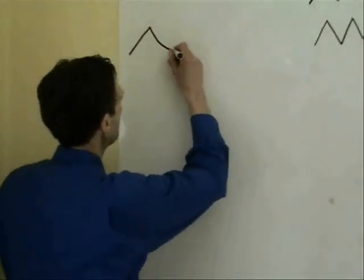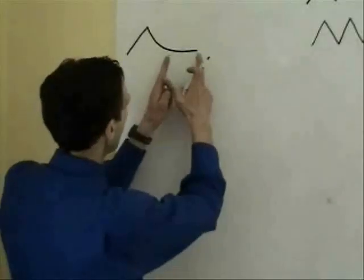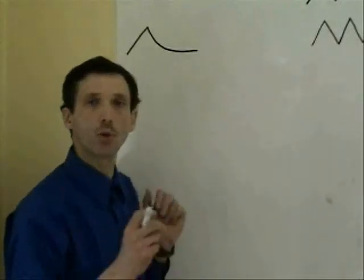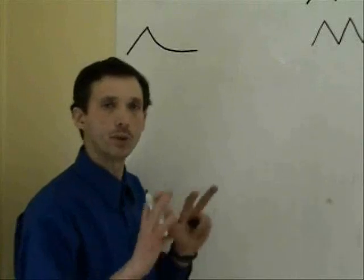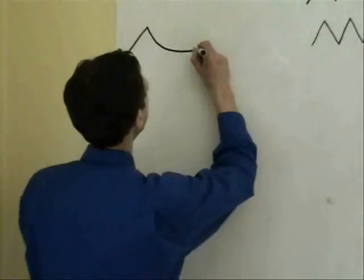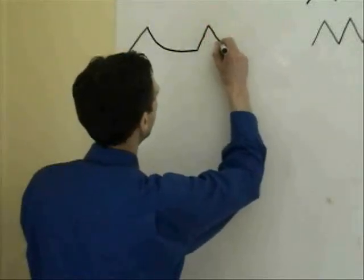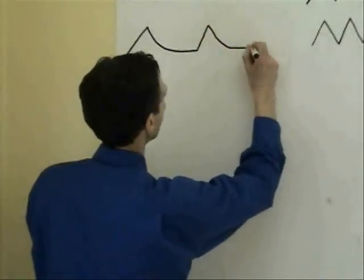And then we relax, we exhale. The exhalation is longer, about three-four seconds. And here we have period of no breathing, so-called automatic pause. When we do nothing, we just relax. And we take another inhale, and we exhale relaxation. The cycles repeat itself.